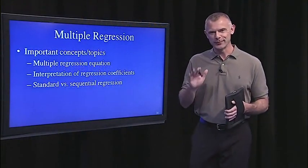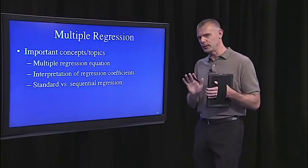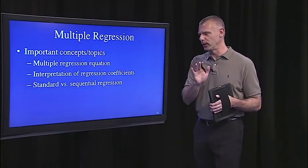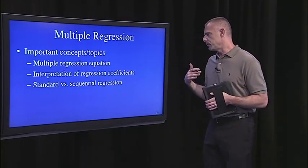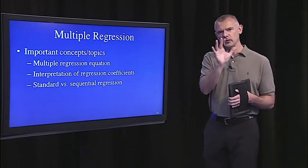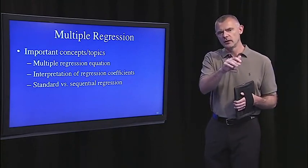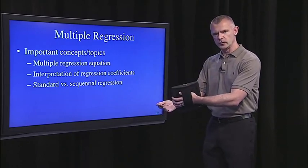That wraps up this segment. The important things to take away are the idea of multiple regression, knowing the components of the equation, knowing how to interpret those coefficients — and we'll go through more examples in the next lecture and the lecture after that. There's also this idea of doing things sequentially or putting all predictors into an equation at once.